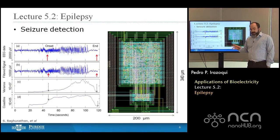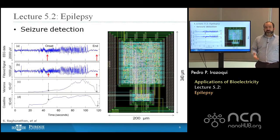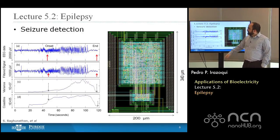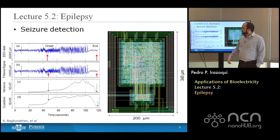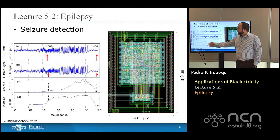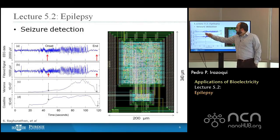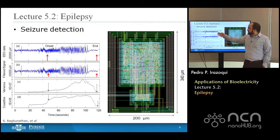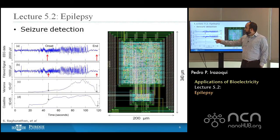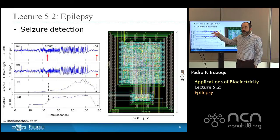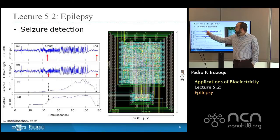Assuming you can record electrical signals reliably in the epileptic brain, the next thing you need to do is process those signals. Here we have recordings of electrical activity over time — we're looking at the EEG data, the filtered signal of that data, and two measures: variance and coastline. These measures ask: given that you have no seizure here and a clear seizure here, can you come up with an algorithm that will detect the onset of the seizure as early as possible without missing a seizure?